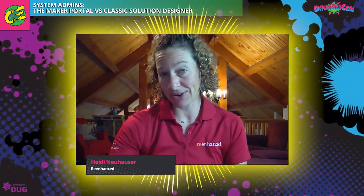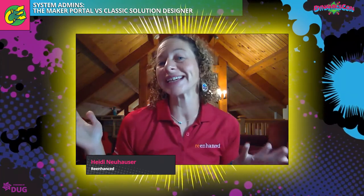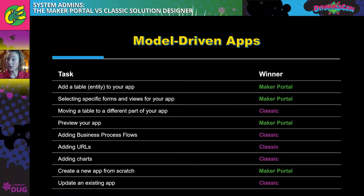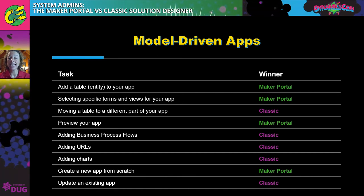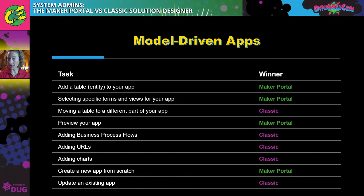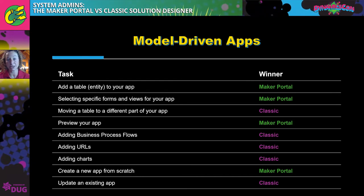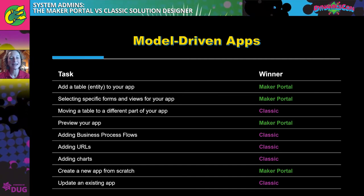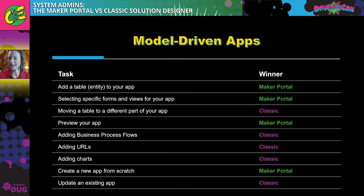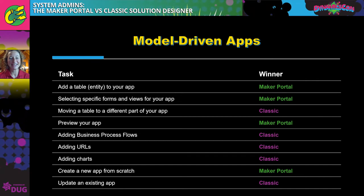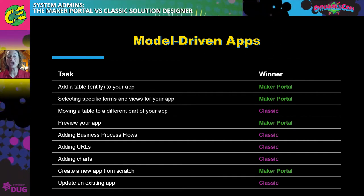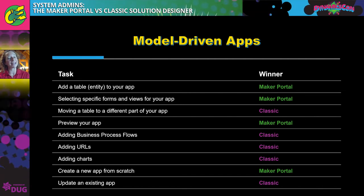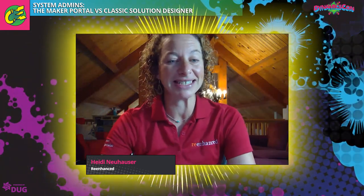Here are some configuration tasks in model-driven apps and the winning experience. Adding a table or entity to your app is so much easier in the Maker Portal. Selecting specific forms and views for your app also goes to the Maker Portal — it's all in one canvas instead of all those little boxes. Moving a table to a different part of your app requires classic. Previewing your app: Maker Portal, hands down. Adding business process flows, URLs, and charts: classic. Creating a new app from scratch: so much easier in the Maker Portal. Updating an existing app: classic.